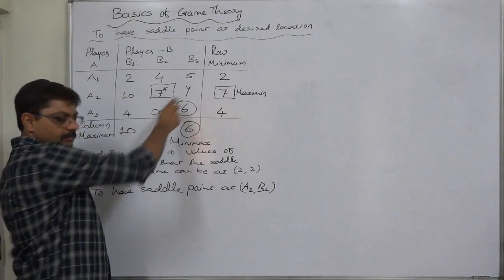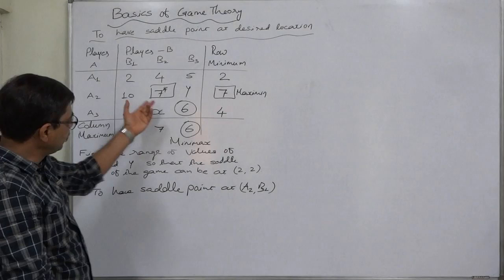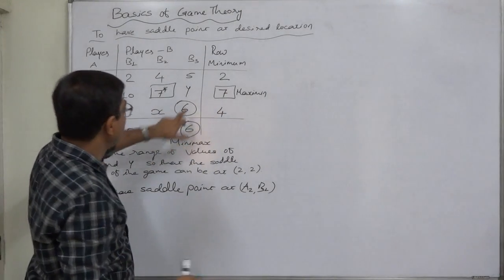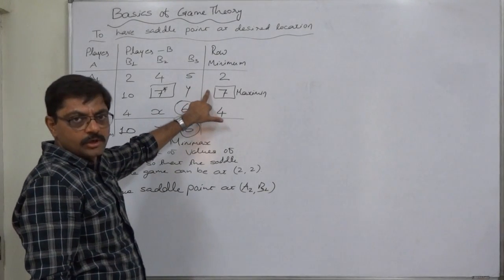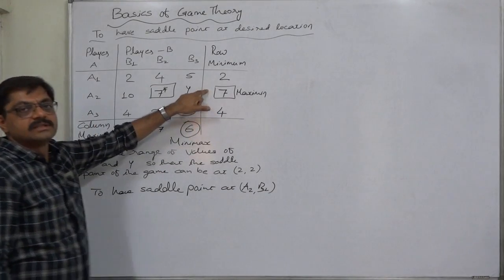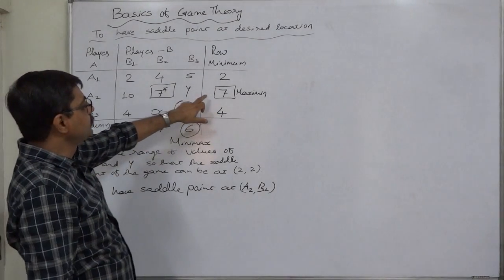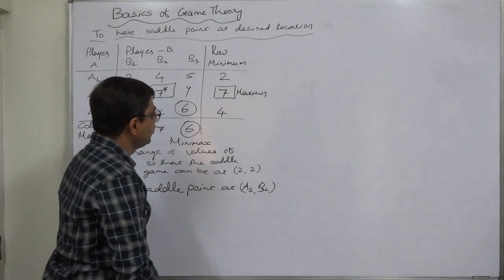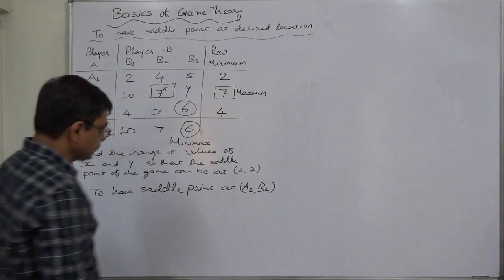First of all, if seven remains as maximum value, then only it is possible. So y should not take value less than seven. If y is less than seven, then it will substitute seven here. Say for example if y is six, then six will come here. So y should not be six or less, or say more precisely, y should not be less than seven. So y should be greater than or equal to seven.